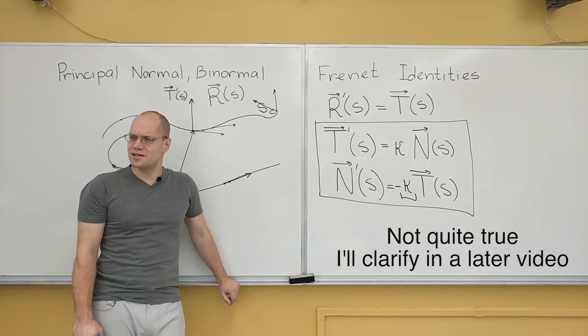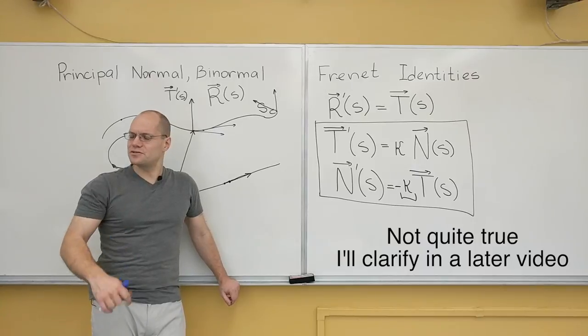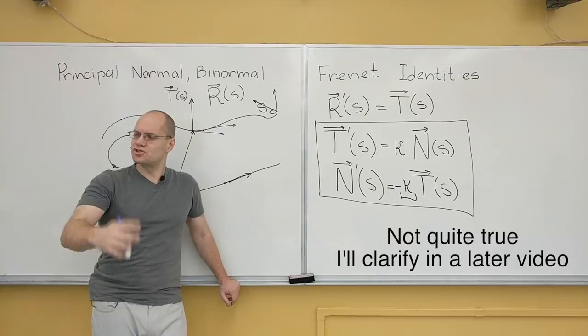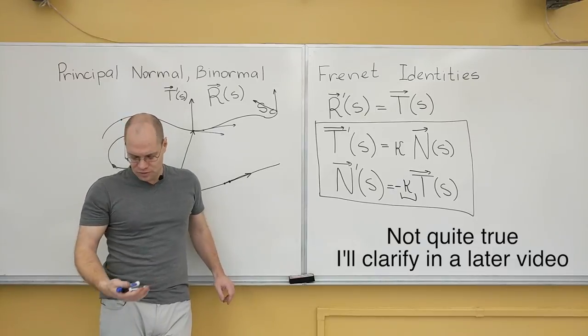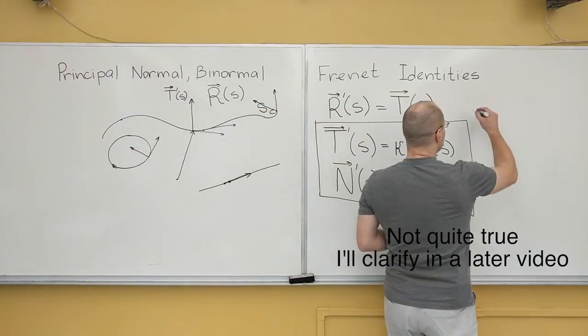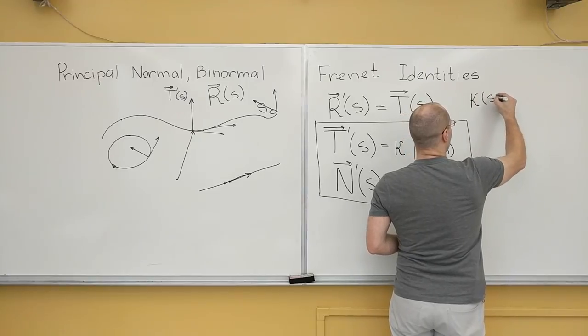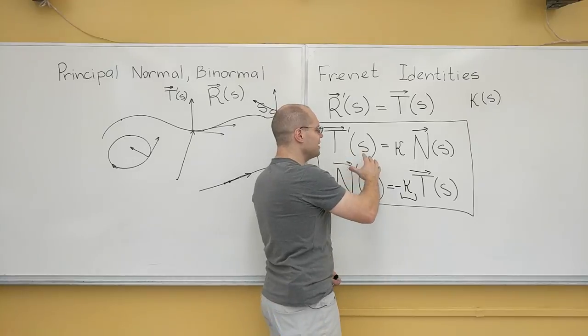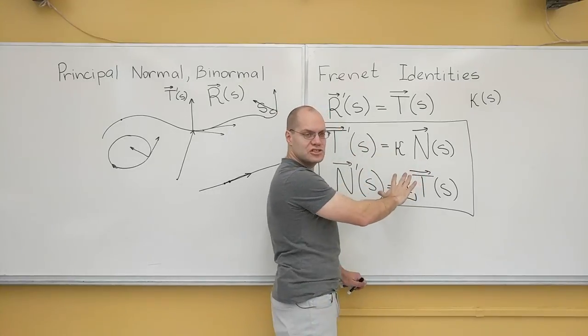I believe it's called the intrinsic, not parametrization, the intrinsic description of the curve, when you're given kappa as a function of arc length. That specifies the curve. And the key to that is the fact that this system closed on itself.